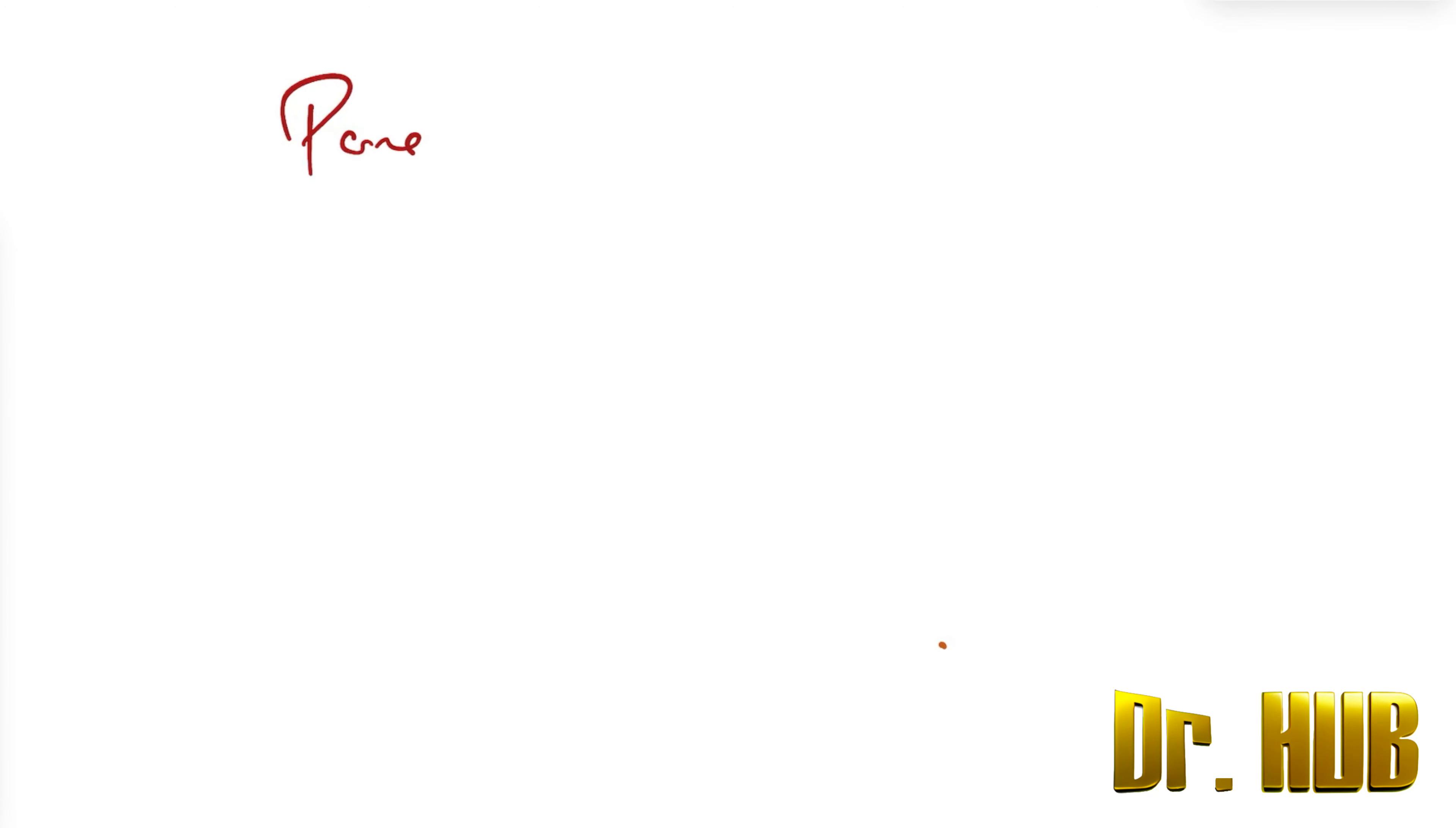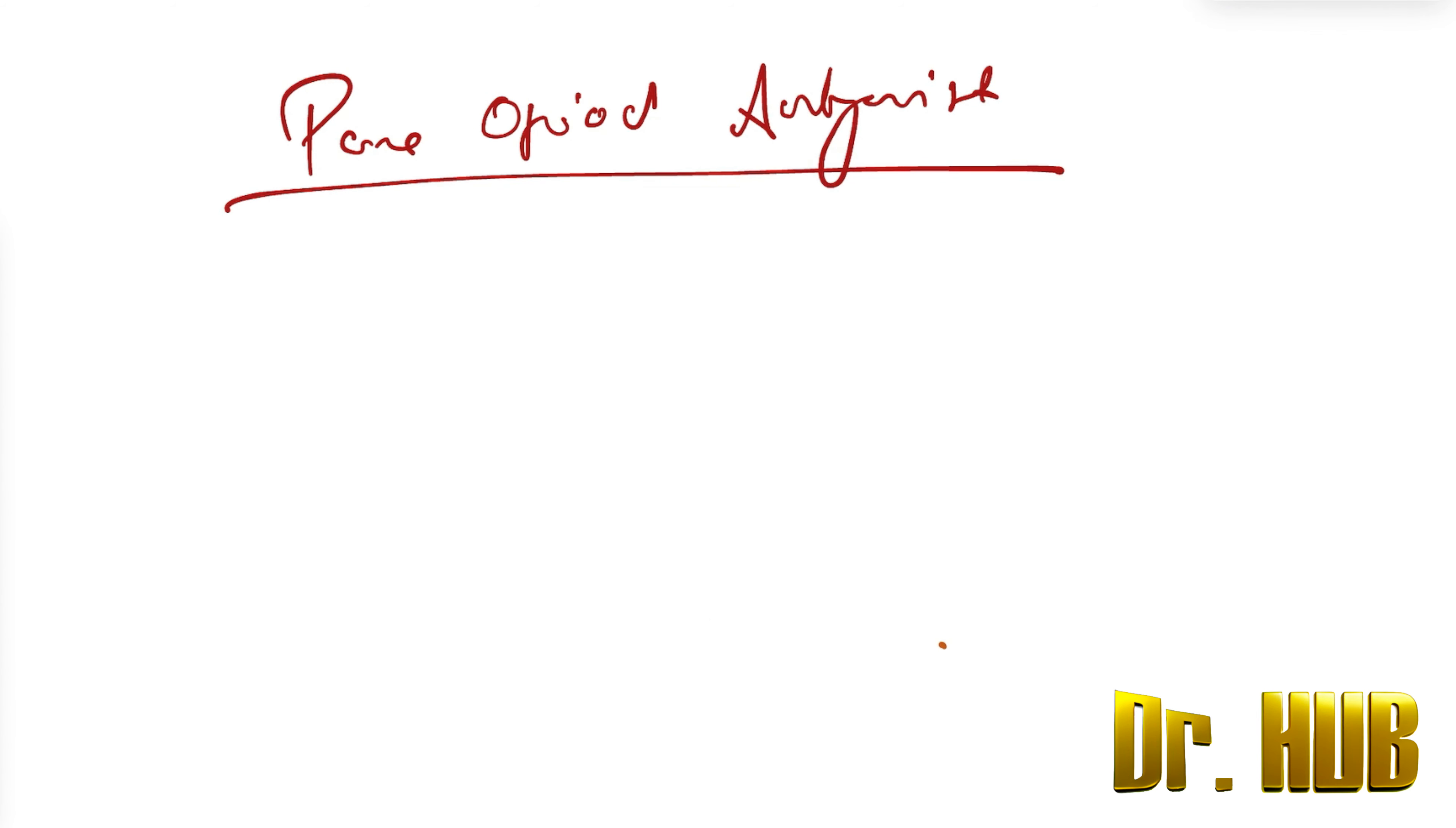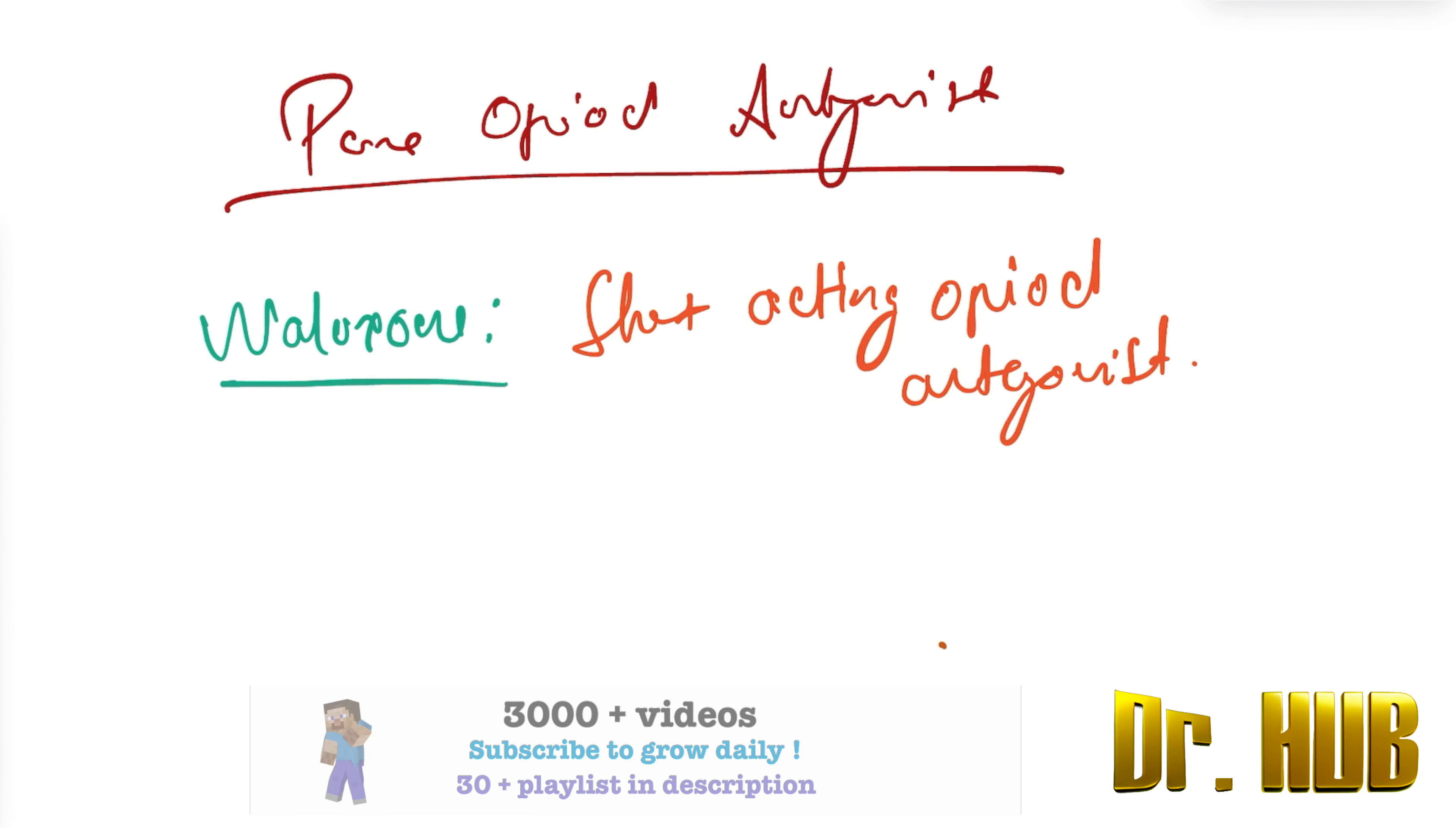Today we are looking at pure opioid antagonists. First, we are starting with the drug naloxone. Naloxone is a short-acting opioid antagonist.